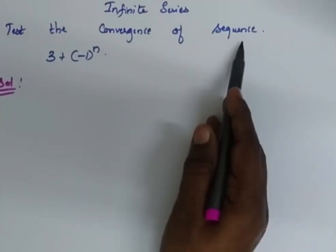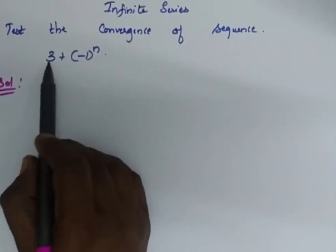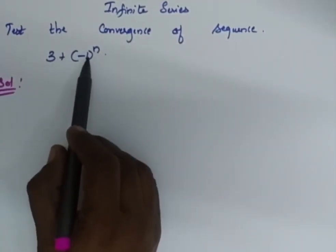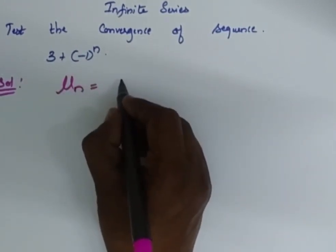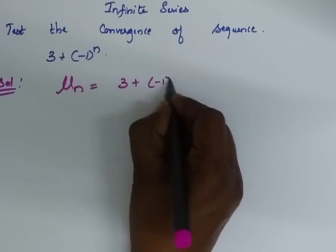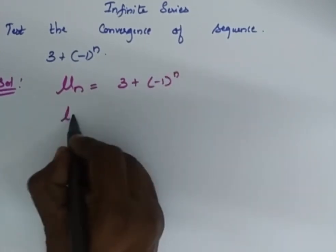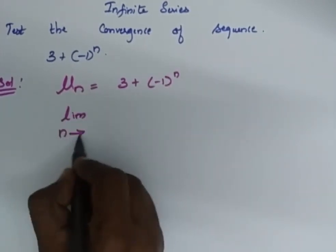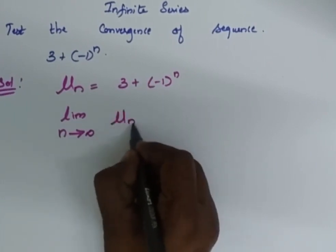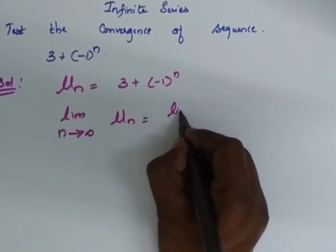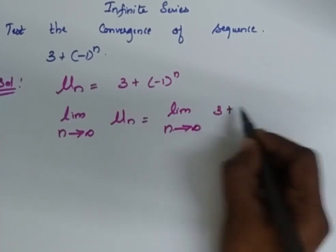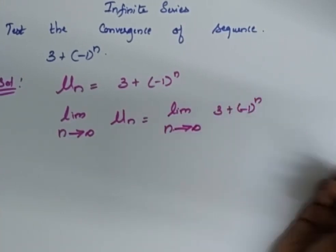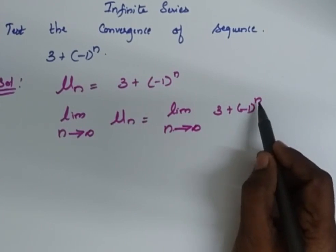Test the abundance of sequence 3 + (-1)^n. Consider u_n = 3 + (-1)^n. The limit as n tends to infinity of u_n equals the limit as n tends to infinity of 3 + (-1)^n, where n can be odd or even.